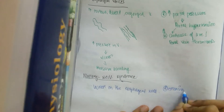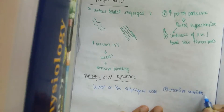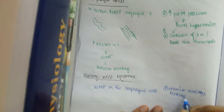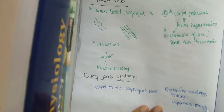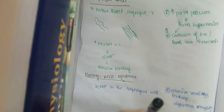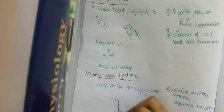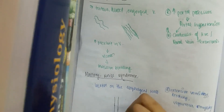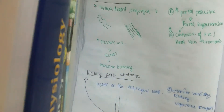The reason for these lacerations is extensive vomiting. Whenever one vomits extensively, retches, or has vigorous coughing, all these may lead to lacerations of the gastroesophageal wall — specifically at the lower end, that is the gastroesophageal junction. These are called Mallory-Weiss syndrome.